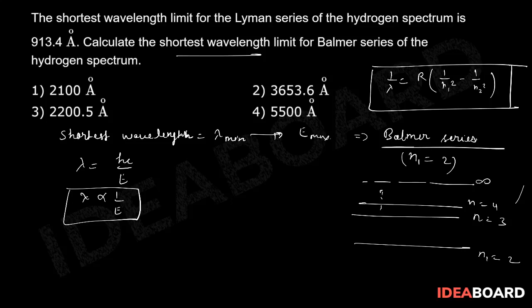So you can understand, this is the minimum energy transmission, this is further more. Then this will be the maximum, infinite to 2. So this is related with E max, so simply this transmission will relate with lambda minimum, correct?